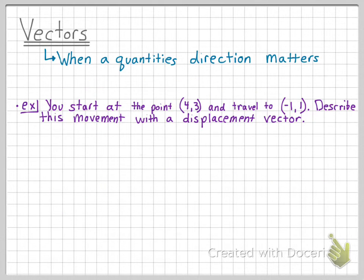Let's do another example. You start at the point (4,3) and travel to the point (-1,1). Describe this movement with a displacement vector.